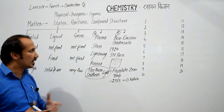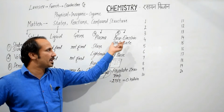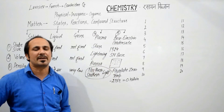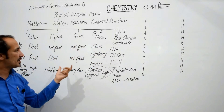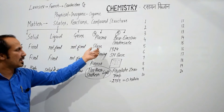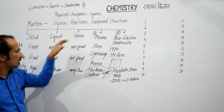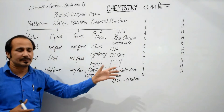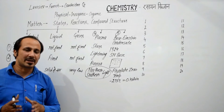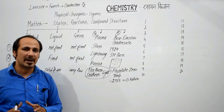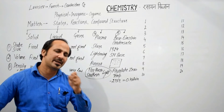पदार्थ की कितनी अवस्थाएं होती हैं? पांच अवस्थाएं होती हैं. किस अवस्था का नाम एक Indian Scientist के नाम पर पड़ा है? वो state है Bose-Einstein Condensate. States of Matter related अगर कोई question करें कि stars में जो state होती है वो किस अवस्था में होती है — solid, liquid, gas, या plasma के रूप में — तो आपके answer बदल जाते हैं. रटना नहीं है, समझ के करना है — that is my only motto, and that's why I promise that learning chemistry will be a very easy task for you guys.